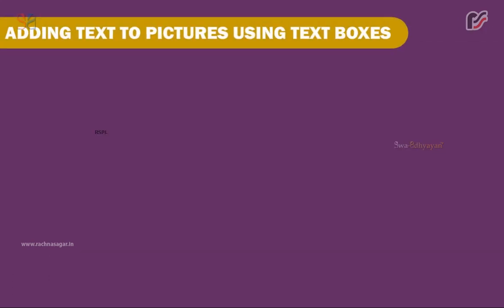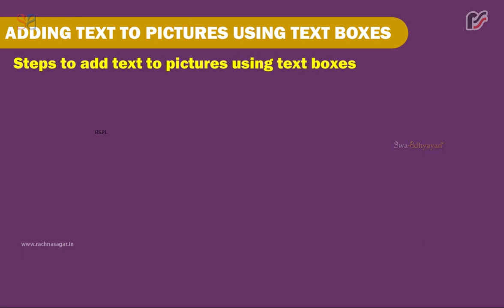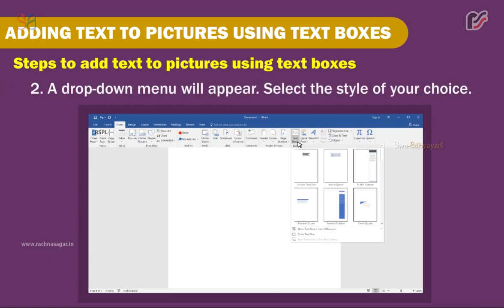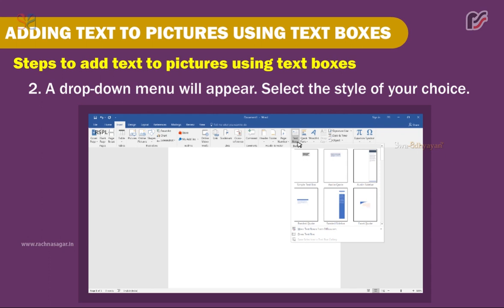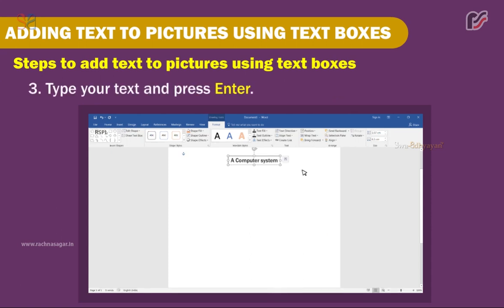Adding Text to Pictures Using Text Boxes. A text box is a rectangular box in which text can be typed. It can be moved around and positioned anywhere inside a document, and you can use it to label parts of a picture. MS Word allows you to add text boxes with a variety of styles and effects. Steps: 1. Click on the Text Box option in the Insert menu. 2. A drop-down menu will appear — select the style of your choice. 3. Type your text and press Enter.